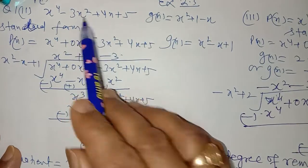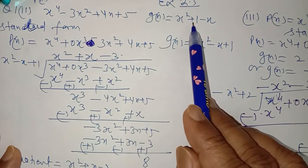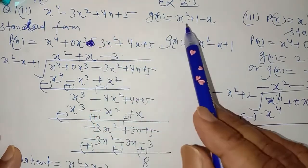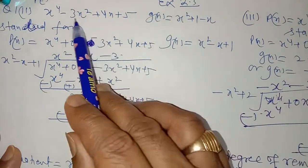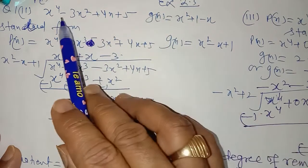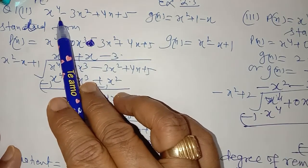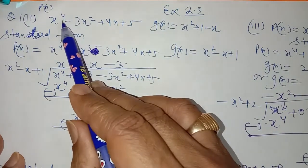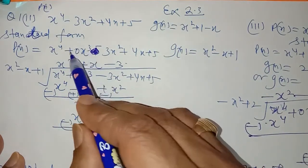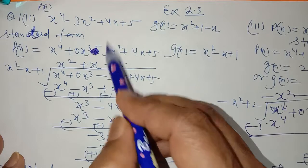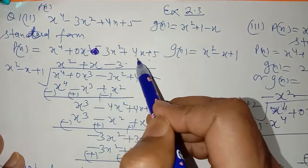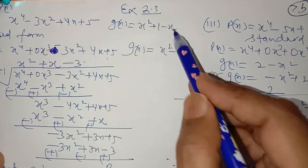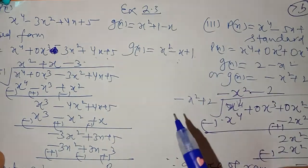Now you have to divide this polynomial by this. To divide a polynomial, this will be the dividend and this will be the divisor. You always have to write the polynomial in the standard form. Standard form means decreasing power of x. Here x has power 4, the cube term is missing, so write 0x³ minus 3x² plus 4x plus 5 — standard form is complete, no term should be left out. For the divisor, write x² minus x plus 1 — now this is in standard form.